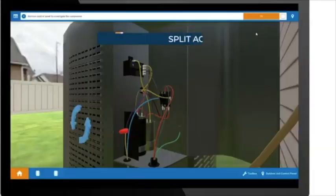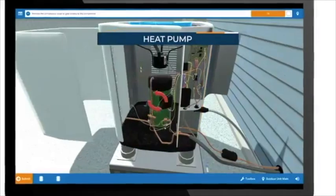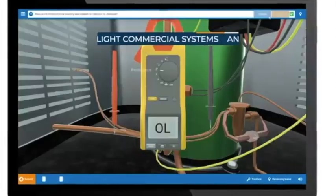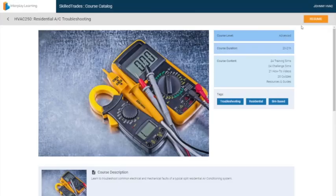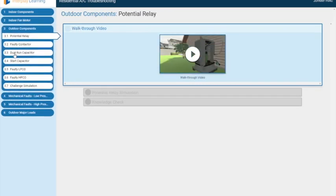Fully interactive sim courses include a split AC, gas furnace, gas boiler, heat pump, and a three-phase light commercial AC system. You get hours of learning to help you better your team. Each sim has its own group of faults for the learner to practice on.